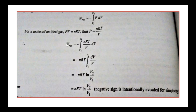Where W is the work done in reversible process, n is the number of moles of the gas, R is the gas constant, T is the temperature, V2 is the final volume, and V1 is the initial volume. This is the formula for the work done in reversible isothermal expansion of an ideal gas.